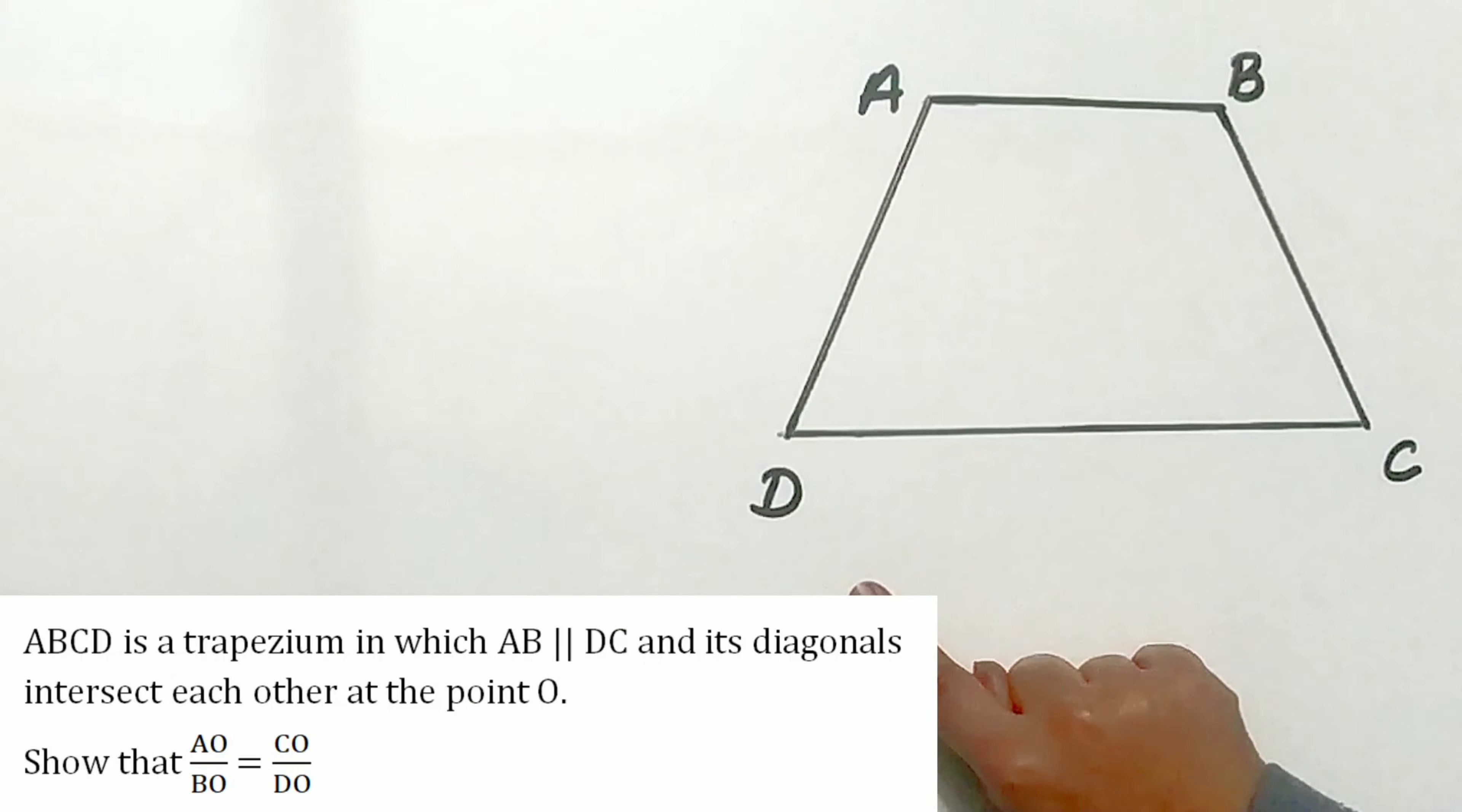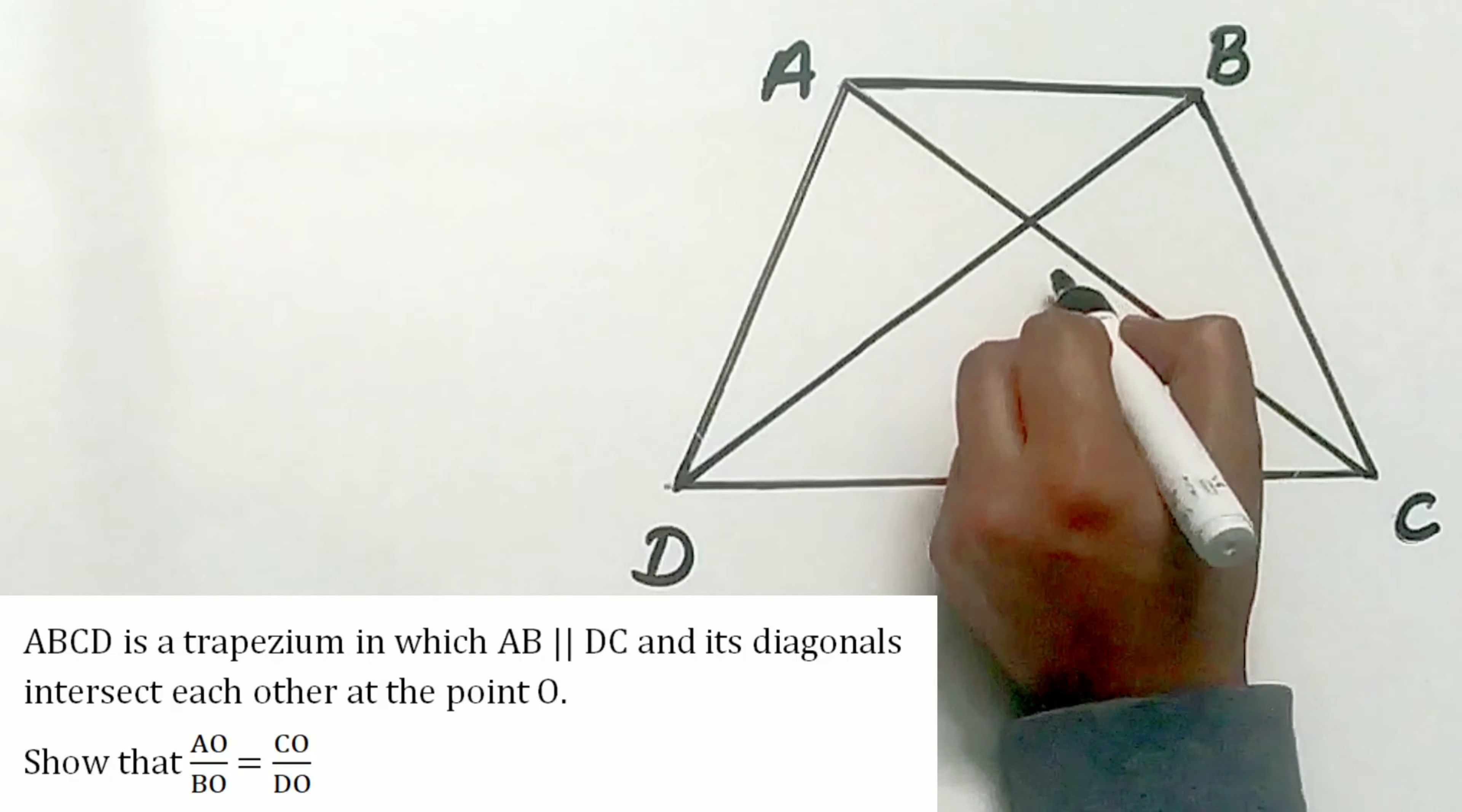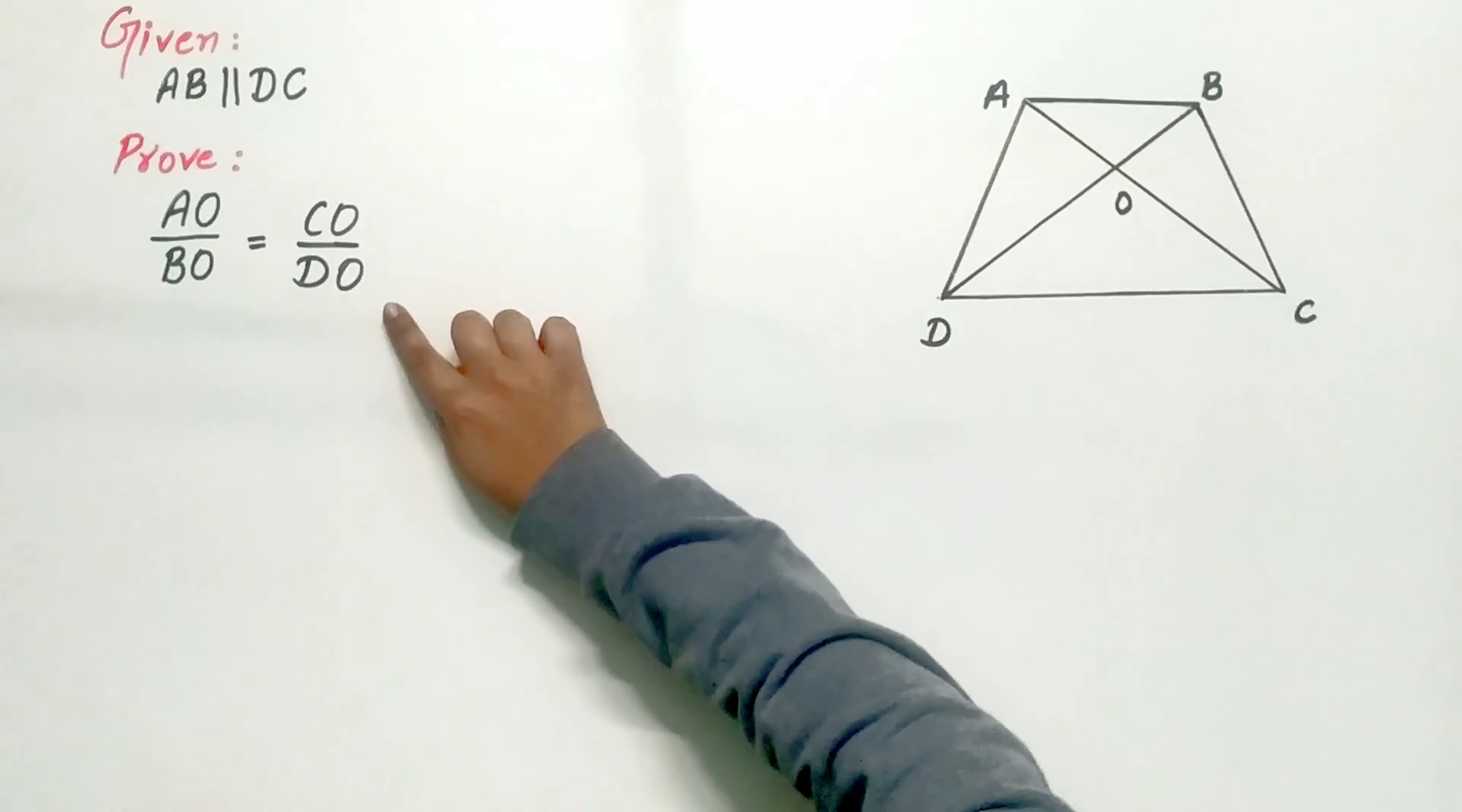ABCD is a trapezium in which AB is parallel to CD and its diagonals intersect each other at point O. We have to prove that AO by BO is equal to CO by DO.